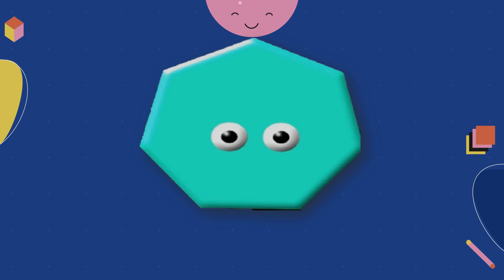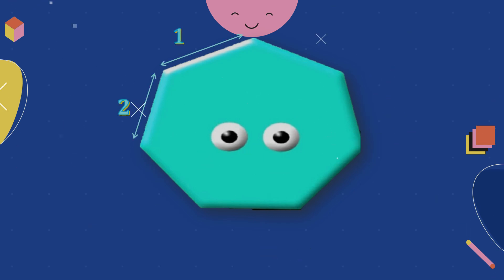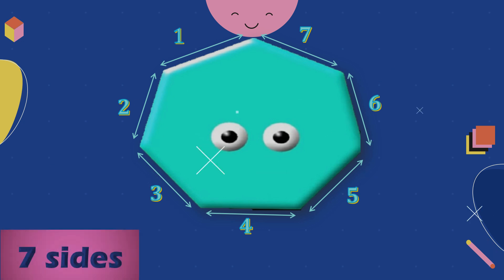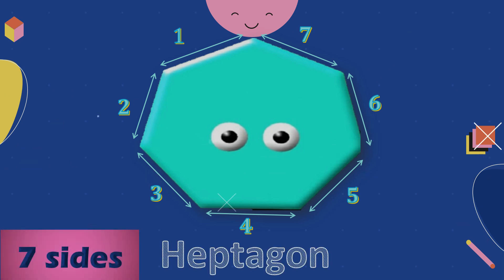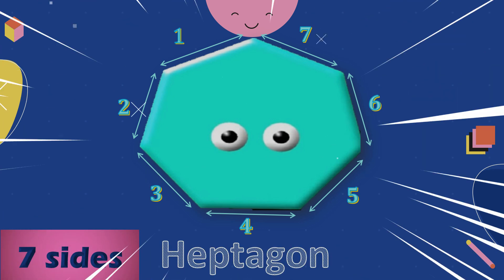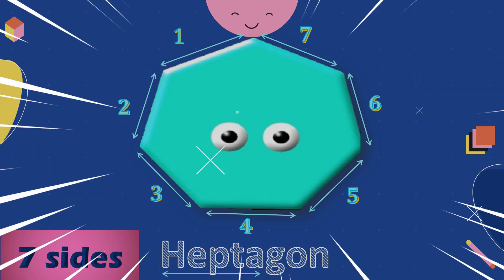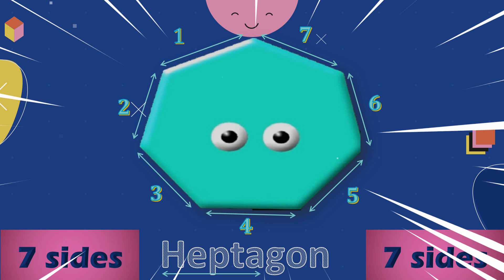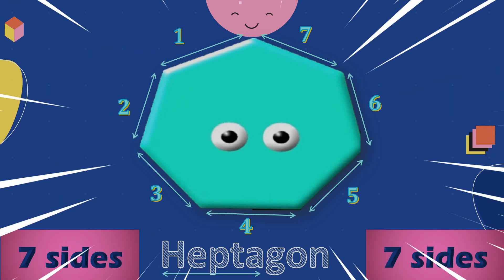Let's count the number of sides. One, two, three, four, five, six, seven. Seven sides is Heptagon. Hepta means seven. Heptagon.